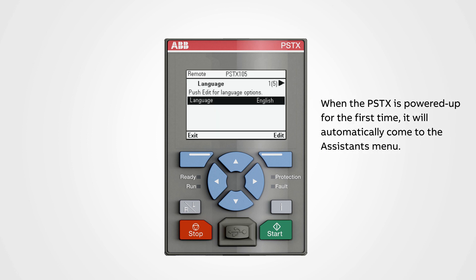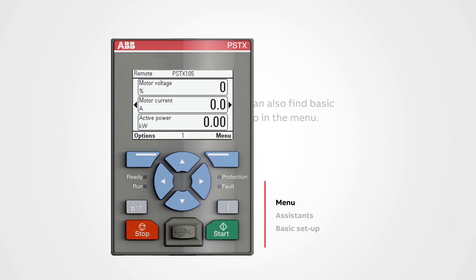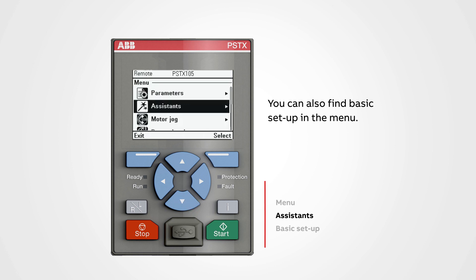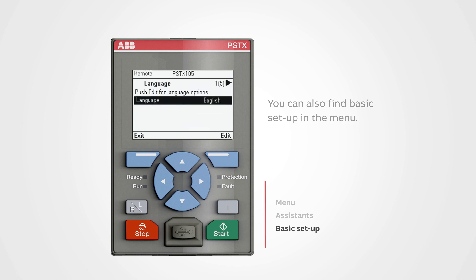When the PSTX is powered up for the first time, it will automatically come to the Assistance menu. You can also find Basic Setup in the menu by pushing the Menu button, then navigate to Assistance, push Select to enter the Assistance menu, go to Basic Setup menu, and push Select to enter the Basic Setup.